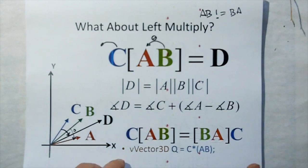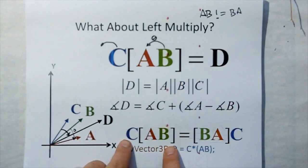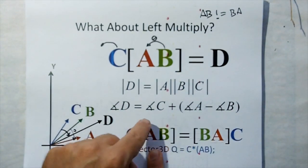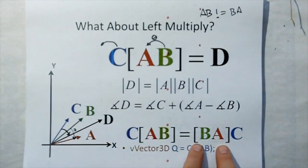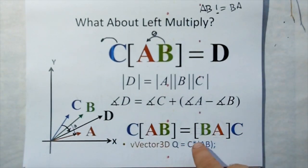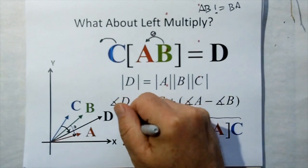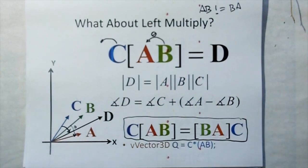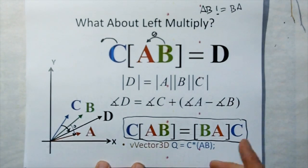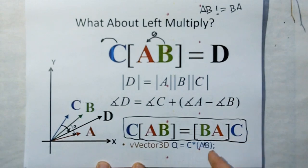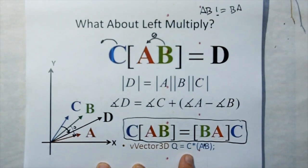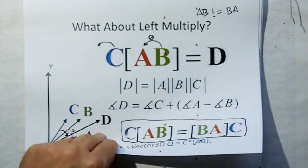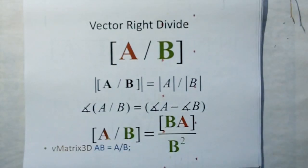This leads to an interesting identity: if we take C times A times B — multiplying C on the other side and flipping the inside by doing a double transpose — these become equal, the same thing. In Vortrix Algebra, to do a left multiply, you just do A times B and then multiply C from the left, and the software will handle that automatically.